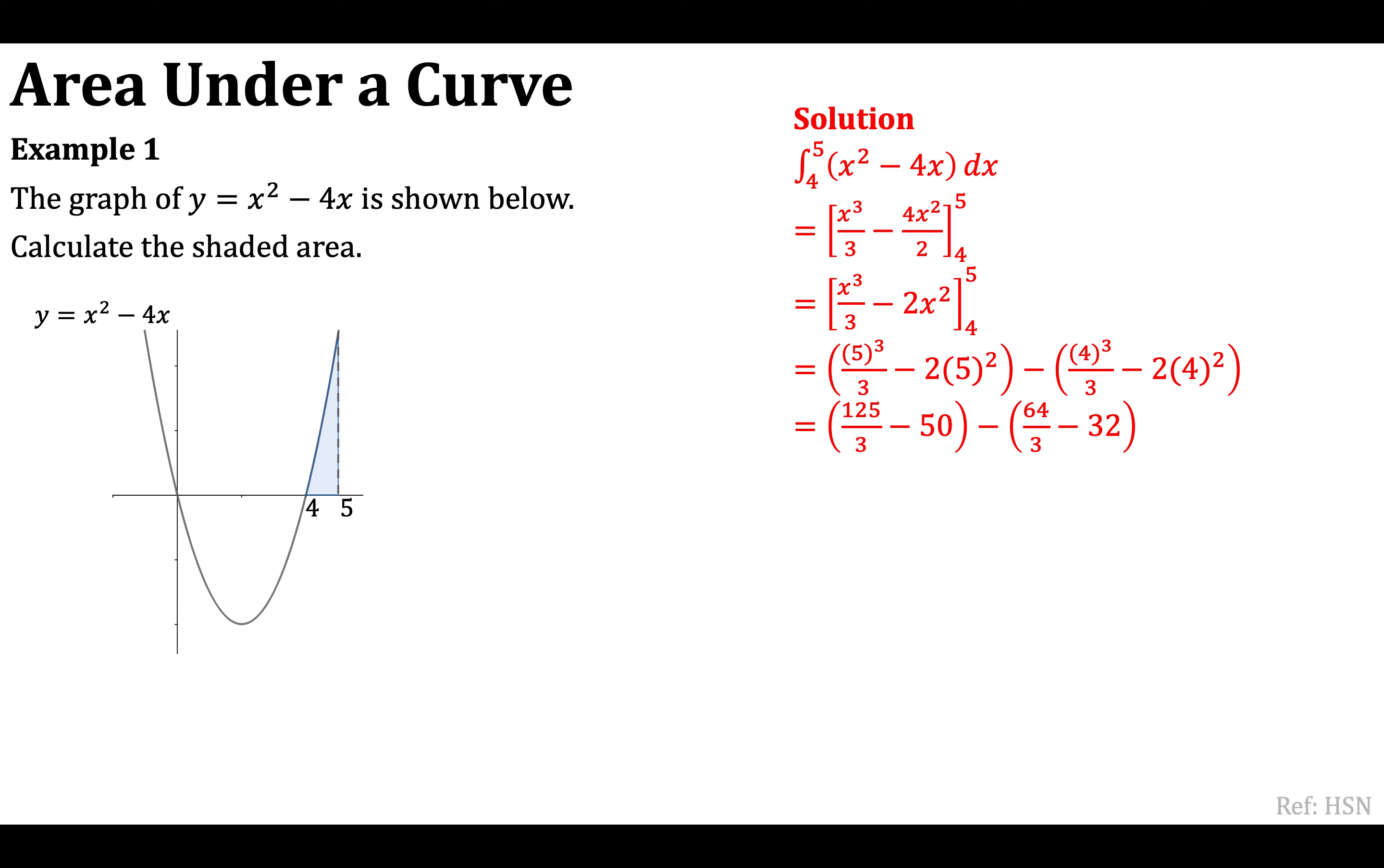In the first bracket, I get 125 thirds minus 50, and the second bracket, 64 thirds minus 32. It's up to you how you now manipulate this numerical expression. You might decide to evaluate each bracket on its own, and then carry out the subtraction, or you might decide to deal with the thirds together, and then deal with the whole numbers. It's entirely up to you. You should be getting the same answer if you're dealing with it correctly numerically. So I am going to expand this bracket. The second bracket, I'm multiplying by negative 1. So I've got 125 thirds minus 50 minus 64 thirds plus 32. And subtracting the 64 thirds from 125 thirds gives me 61 thirds, and negative 50 plus 32 is negative 18.